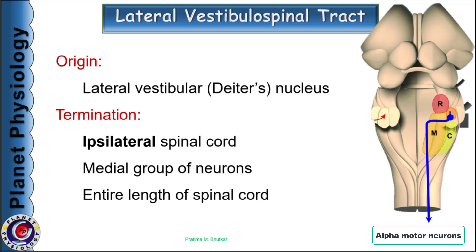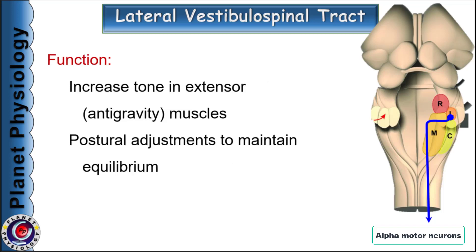The lateral vestibulospinal tract originates from the lateral vestibular nucleus, also known as Deiters' nucleus. The fibers in this tract descend ipsilaterally in the anterior column of the spinal cord — meaning this tract is uncrossed. These fibers terminate on medial group neurons in all segments of the spinal cord. The lateral vestibulospinal tract mainly regulates activity of alpha motor neurons and increases tone in anti-gravity muscles. It is also concerned with postural adjustments to maintain equilibrium.